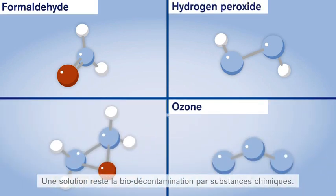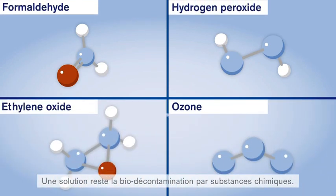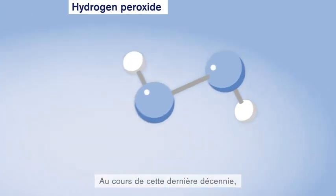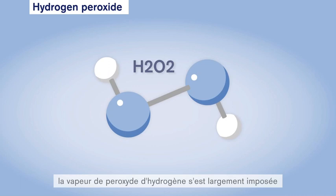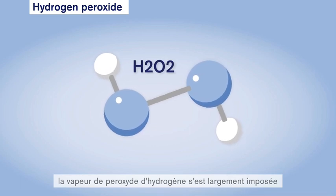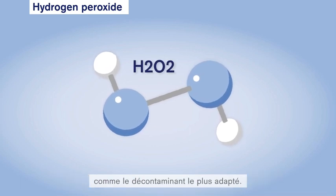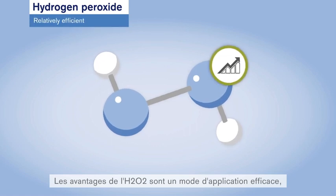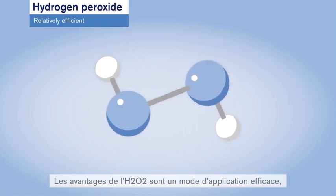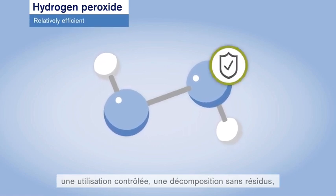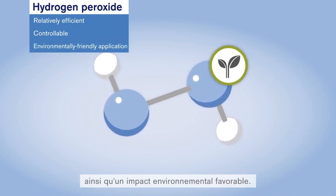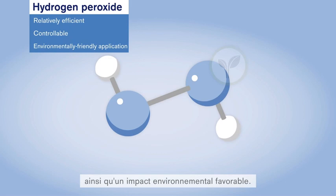One solution is bio-decontamination with chemical substances. Various chemicals are used for this. During the last decade, there has been a significant rise in the importance of hydrogen peroxide vapour as a decontaminant. The advantages of H2O2 are its relatively efficient application, its controllable usage and its residue-free decomposition, thus having a positive environmental balance.